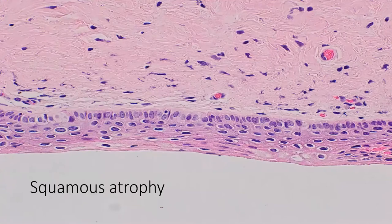Another mimicker of dysplasia is squamous atrophy. This is usually seen in older women. The epithelium is thin and the nucleus-to-cytoplasmic ratio is high. However, once again, we do not have any atypia or mitosis in this area.